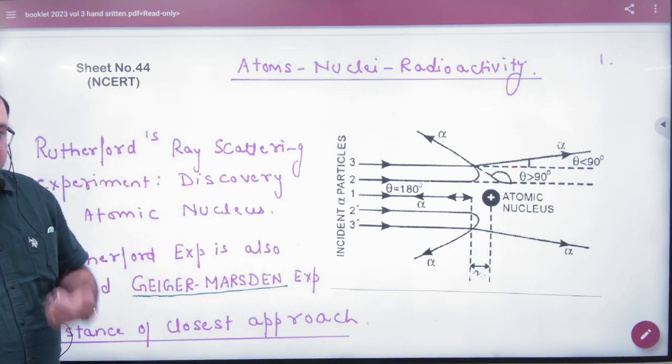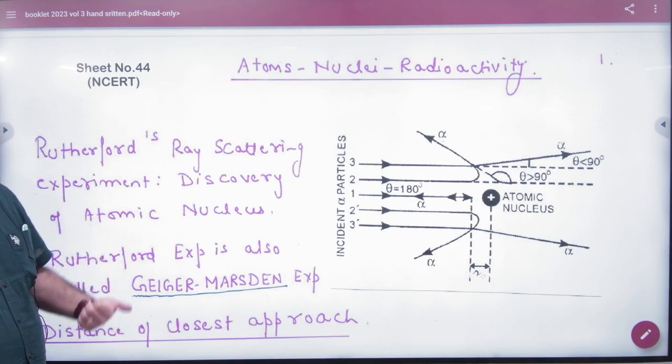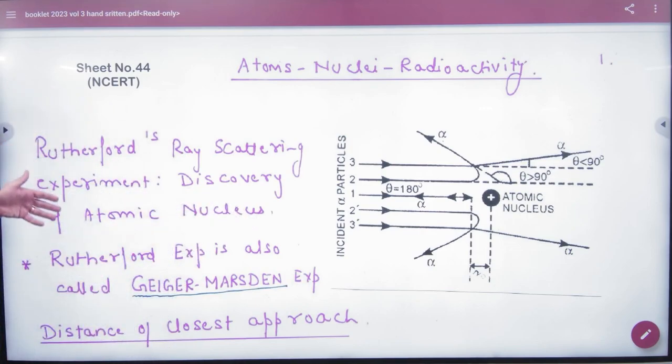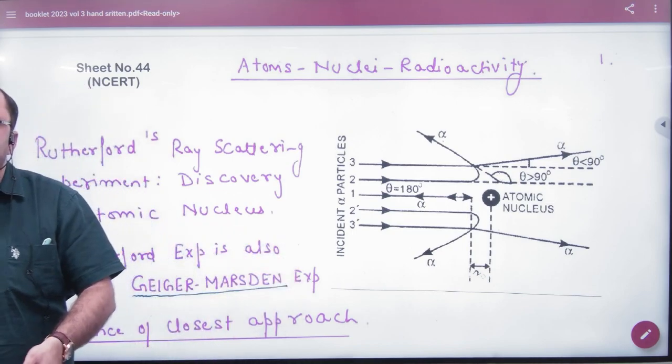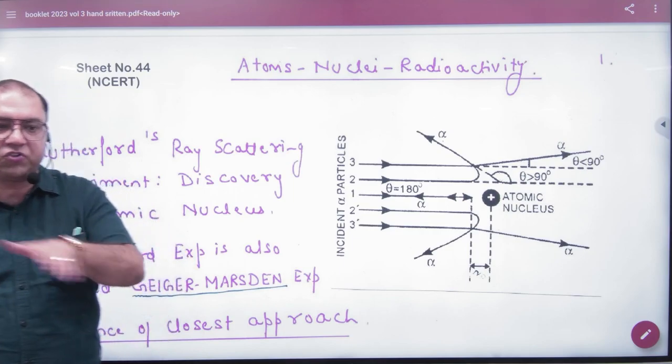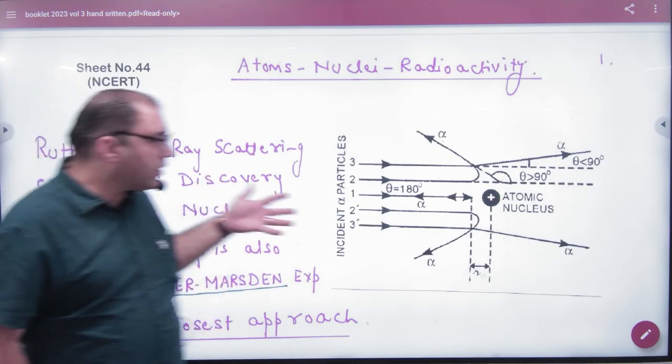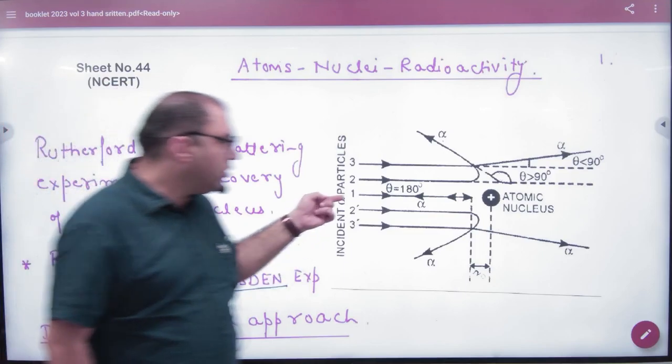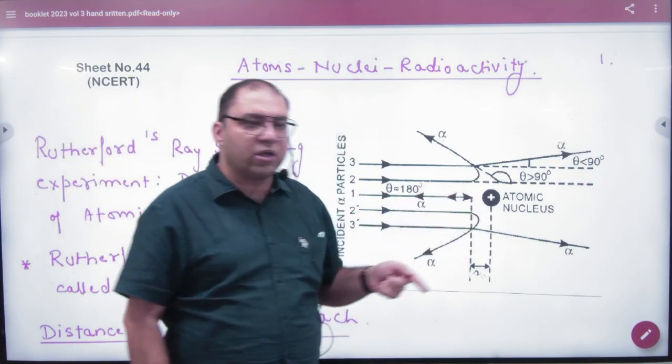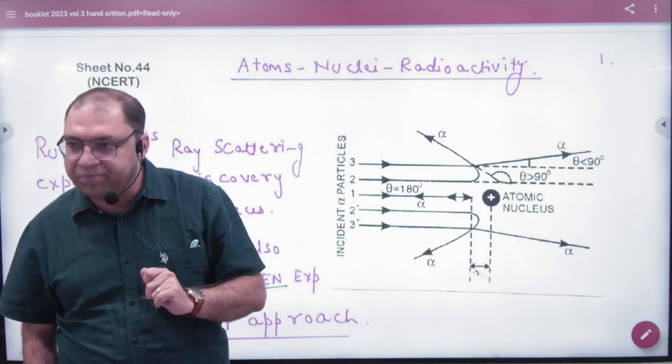Rutherford had an experiment and told the existence of the nucleus. So what he told us? Think that you have an atomic nucleus and Rutherford has alpha particles strike on it. Some alpha particles head-on trying to collide but it will not be able to collide. Why?